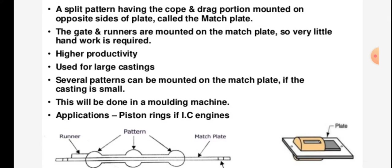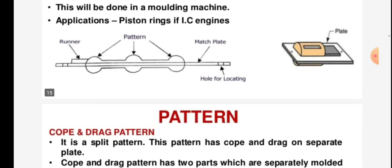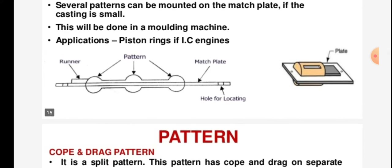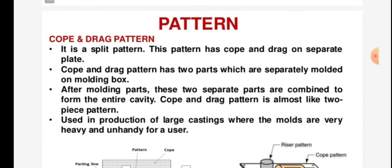This will be done in the molding machine. An example application is piston rings for IC engines. The runner pattern and match plate hole for locating are shown in the figure.